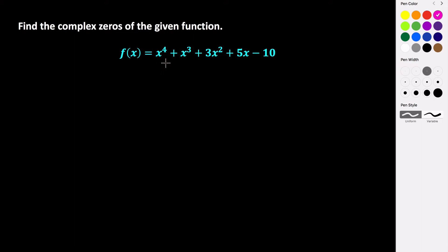Once you know how many zeros you're looking for, what you want to do first is look at the polynomial function and ask yourself: is this easily factorable? Can I factor it by grouping? Or is it a difference of squares? Or does it act like a quadratic trinomial that can be easily factored in the same form? In this case, it's none of those — we can't factor this very easily. So what we have to do is look at all of our values of P and Q and take their quotients, using the rational zeros theorem.